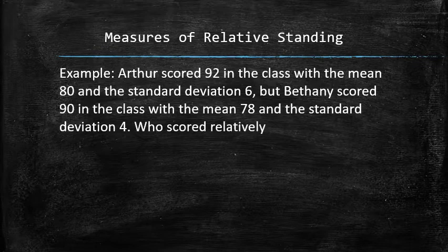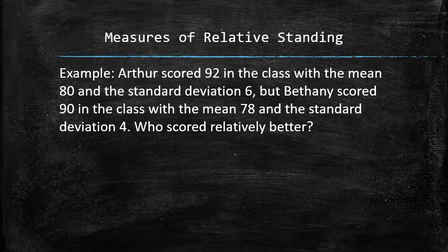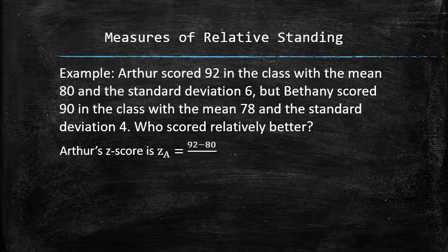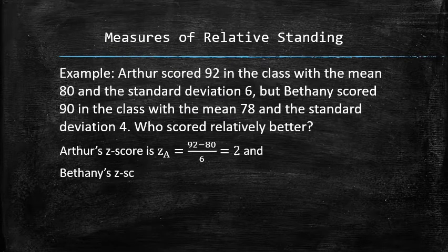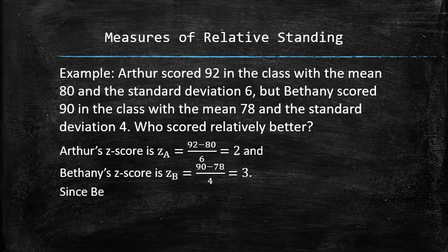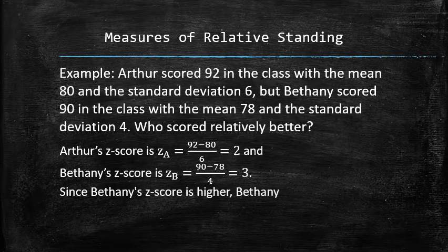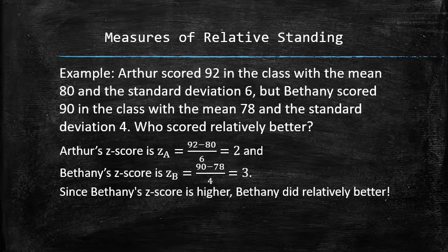Who scored relatively better? Arthur's z-score can be computed using the formula and is equal to 2. Bethany's z-score can also be computed using the formula and is equal to 3. Since Bethany's z-score is higher, Bethany did relatively better than Arthur, despite the fact that her exam score was lower than Arthur's.